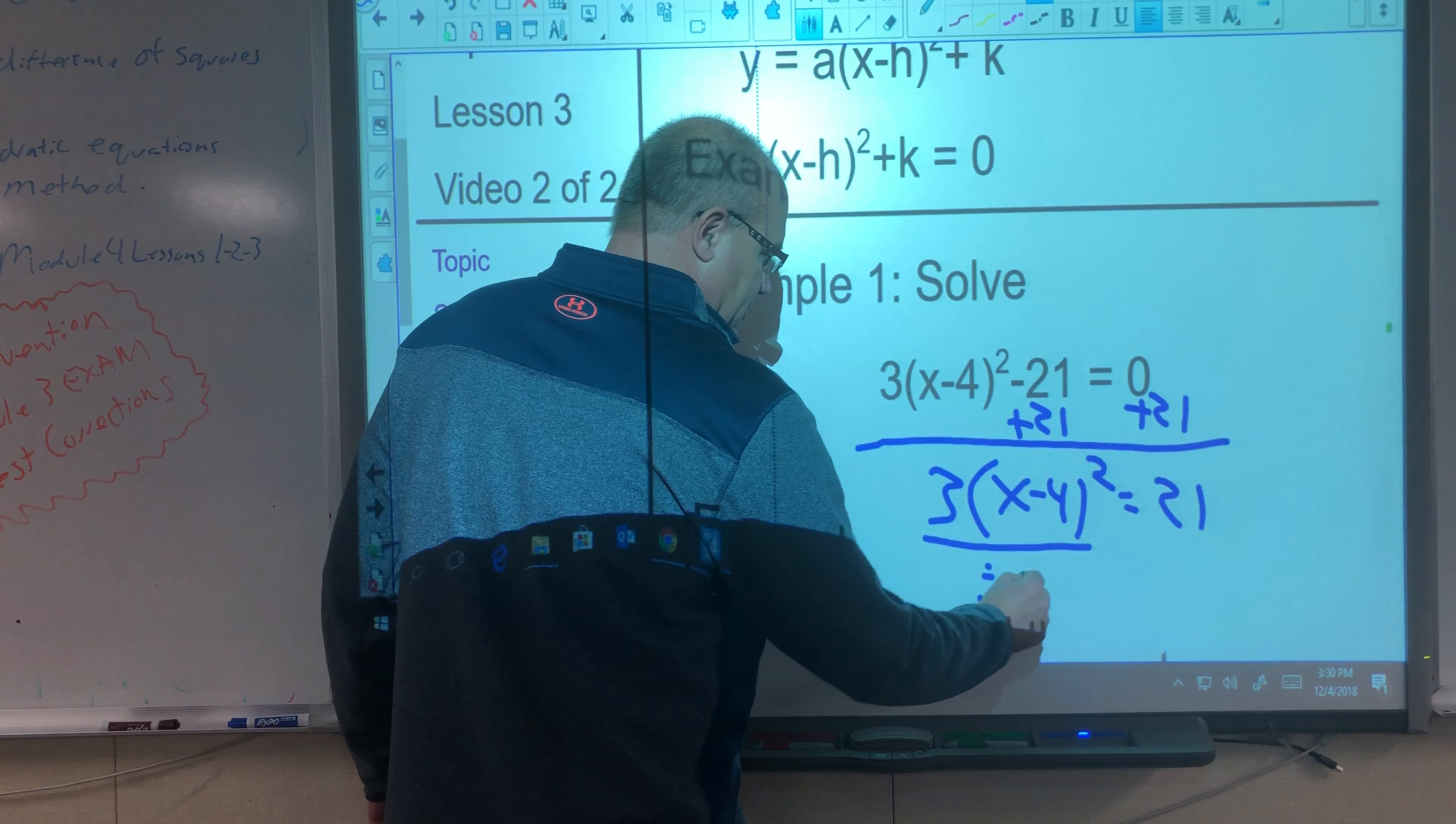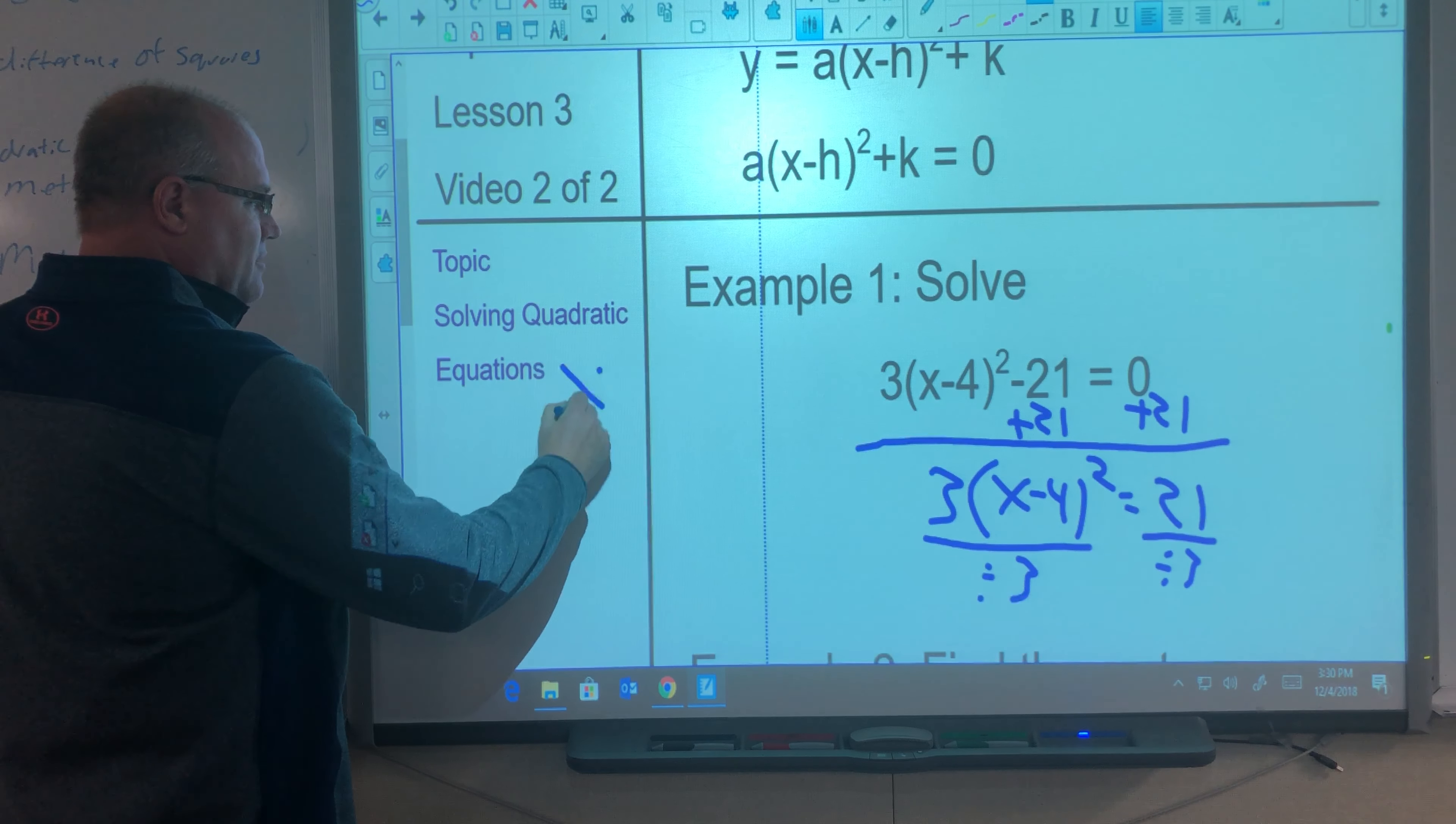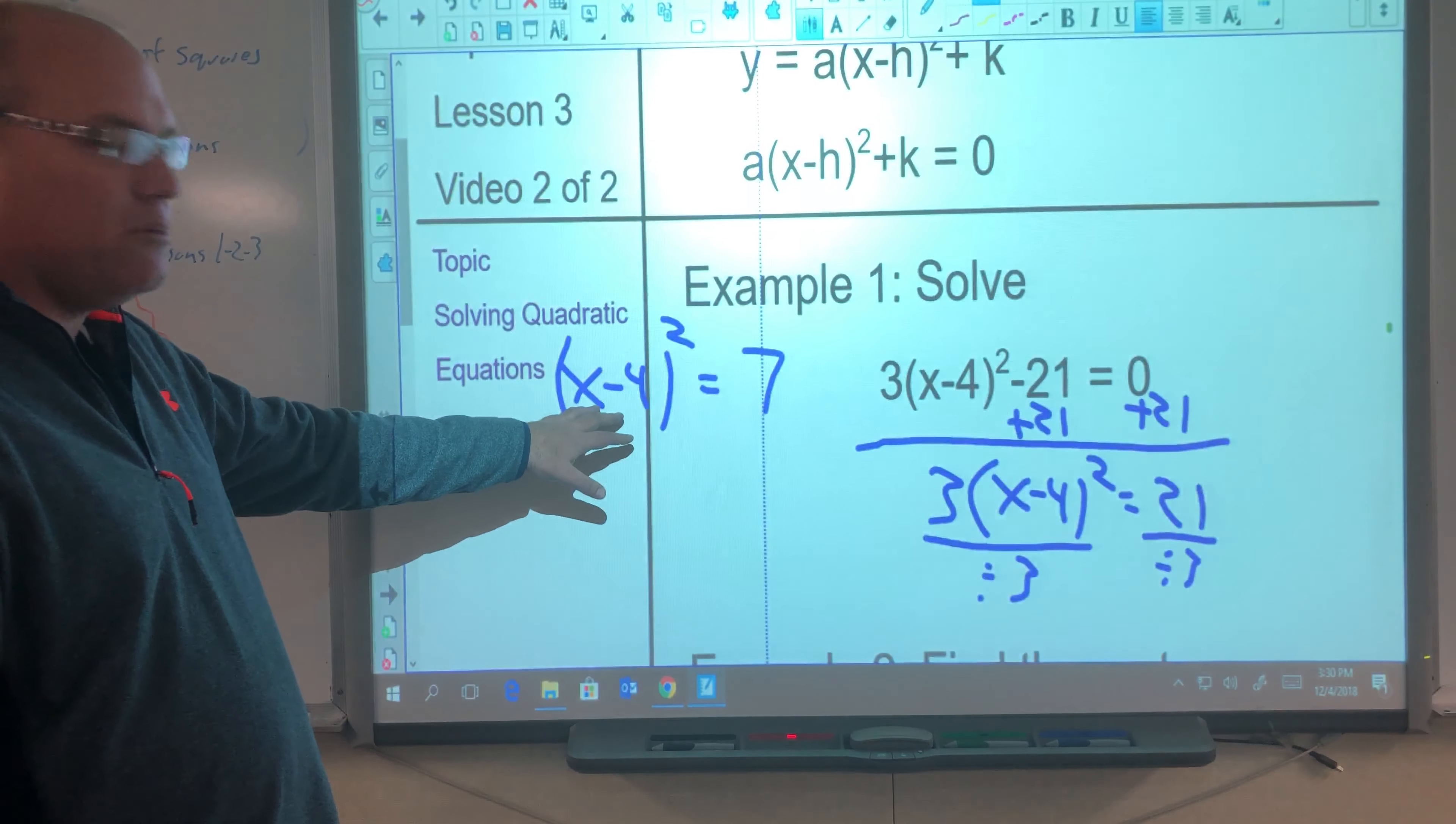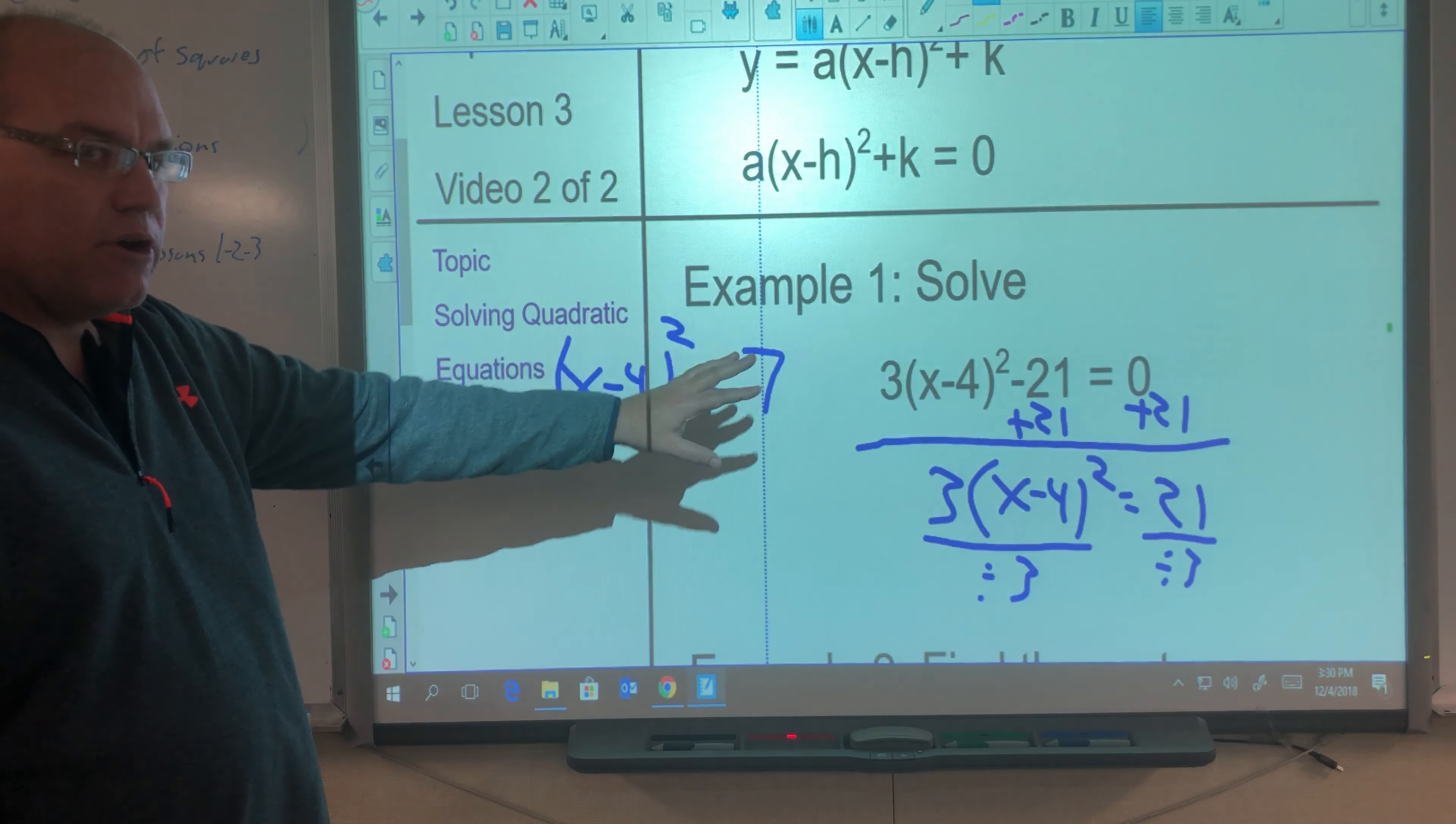We're going to divide both sides by 3. So then I'm going to get x minus 4 squared equals 7. Now I'm in business. We've isolated the binomial squared. So we can undo the square using the square root method. I'm going to take the square root of both sides.